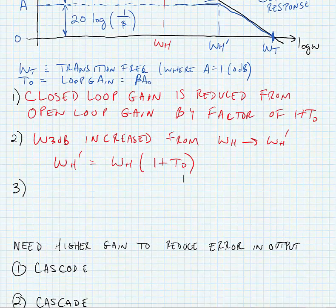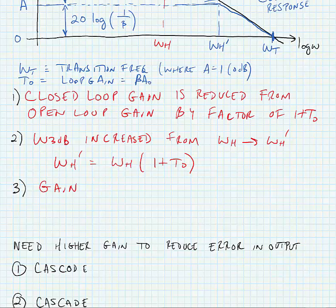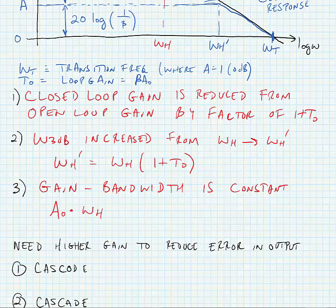And what this leads to is the fact that the gain bandwidth is a constant, the gain bandwidth product. So if we were to take A sub zero, the original open-loop gain, and multiply it by the original 3 dB frequency, we would see that this would be equal to our closed-loop gain times our closed-loop frequency product.